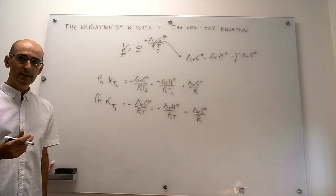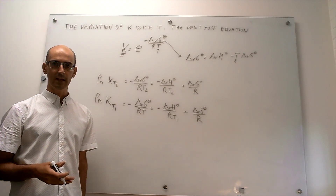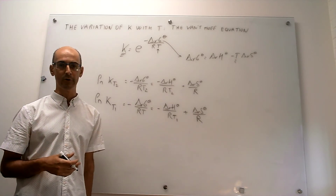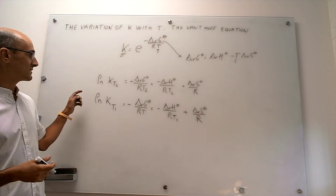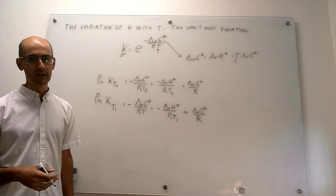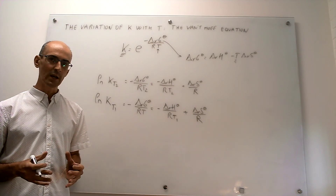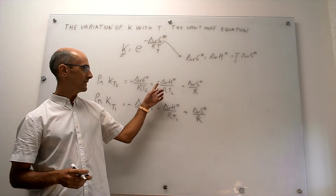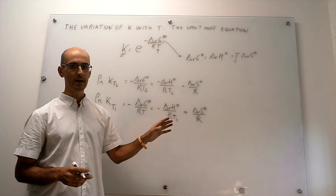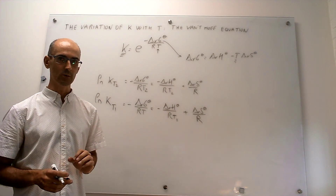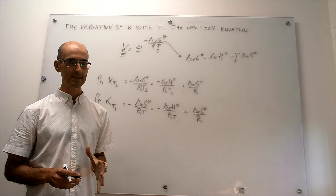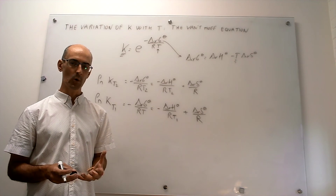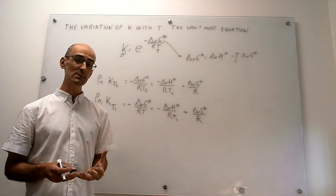To find a closed form expression allowing us to calculate how the equilibrium constant explicitly depends on temperature, we simply take the difference between these two expressions, and that will give us the Van't Hoff equation. To do that, we need to make an approximation: that the enthalpy of the reaction and the entropy of the reaction will not change from T1 to T2. This is not exactly true — it's an approximation — but if the change of temperature from T1 to T2 is quite small, it works quite well.